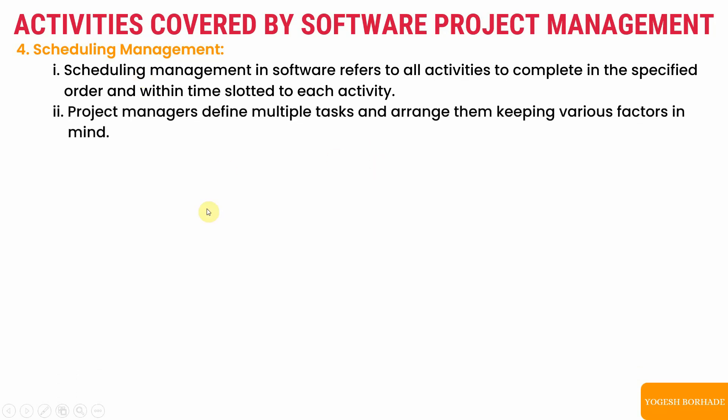Project managers define multiple tasks and arrange them keeping various factors in mind. They distribute tasks to different teams or groups. For example, if Team A is good at object-oriented programming (Java) and Team B is good at procedural languages (C), and the project requires an OOP component, the project manager will assign that component to Team A since they can complete it within the allotted time.